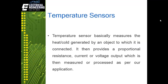Temperature is the most widely sensed physical parameter because of its significance on materials and processes at the molecular level. Temperature is a specific degree of hotness or coldness referenced to a specific scale. Temperature sensors monitor the changes that take place in materials or objects as their temperature changes, detecting a change in physical quantity — such as resistance or voltage — that corresponds to a temperature change.